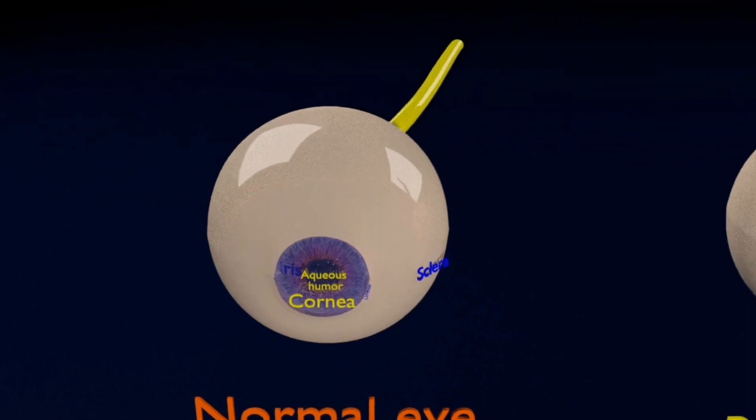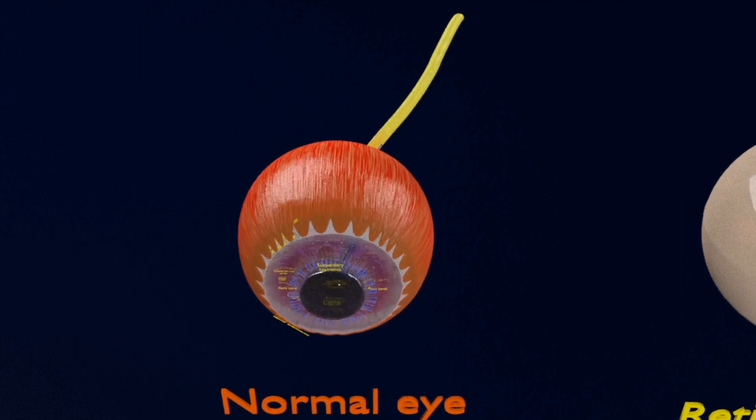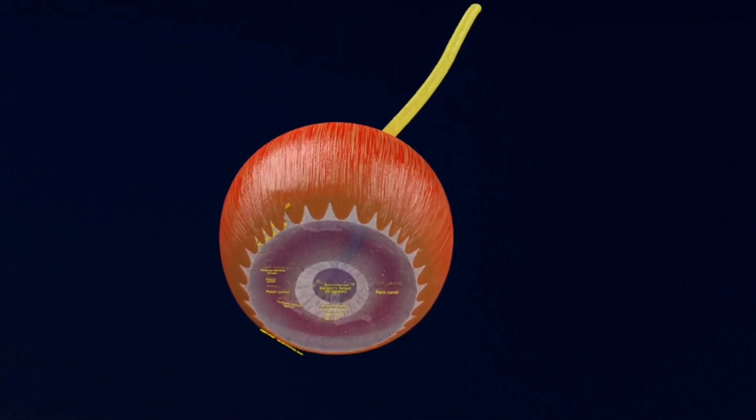Retinal detachment refers to separation of the inner layers of the retina from the underlying retinal pigment epithelium.